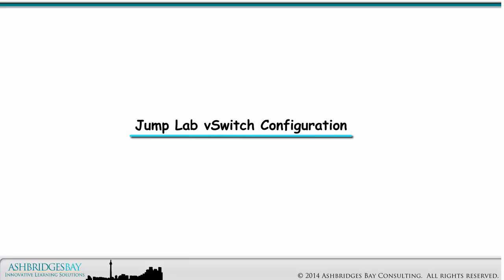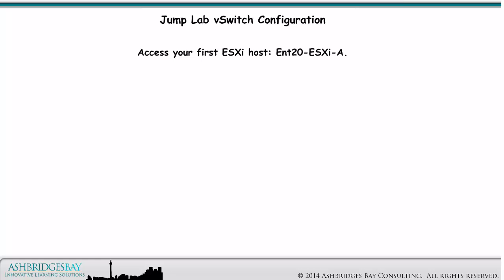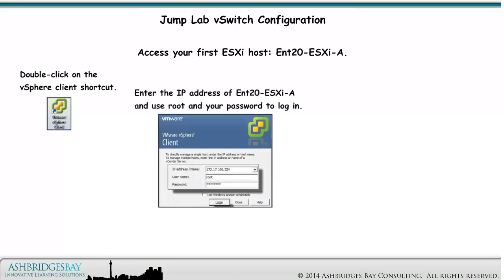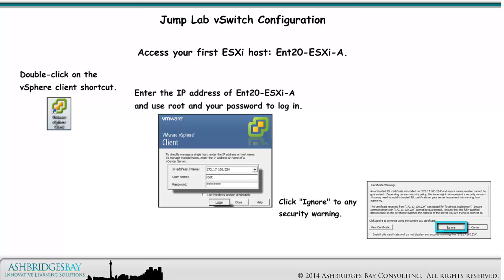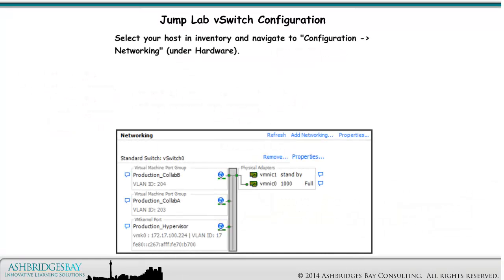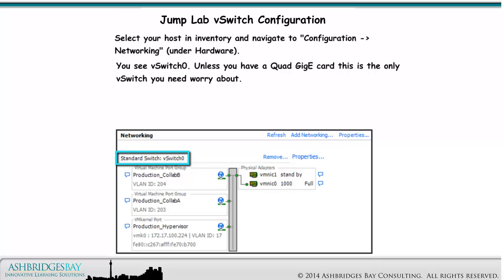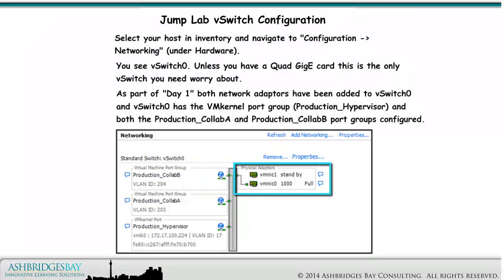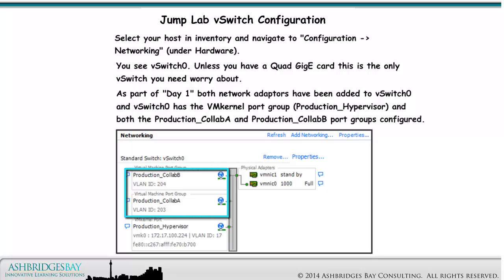The next thing to do is configure the Jump Lab V-switches. Access your first ESXi host, Enterprise 20 ESXi A. Double-click on the vSphere client shortcut. Enter the IP address of your ESXi host and use root and your password to log in. Click Ignore to any security warning. Select your host in Inventory and navigate to Configuration Networking under Hardware. You see vSwitch 0. Unless you have a Quad Gig E card, this is the only vSwitch you need to worry about. As part of Day 1, both network adapters have been added to vSwitch 0, and vSwitch 0 has the VM kernel port group, Production Hypervisor, and both the Production Collab A and Production Collab B port groups configured.